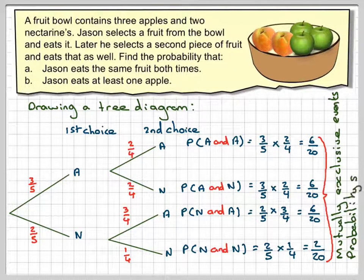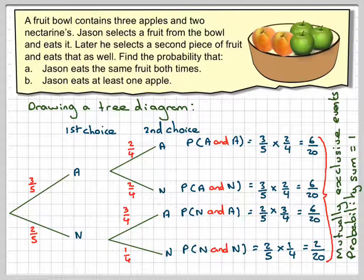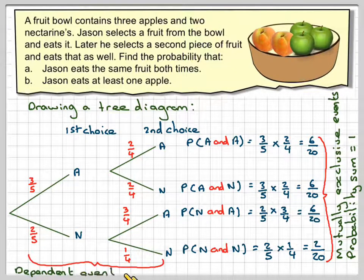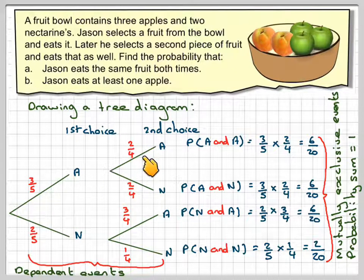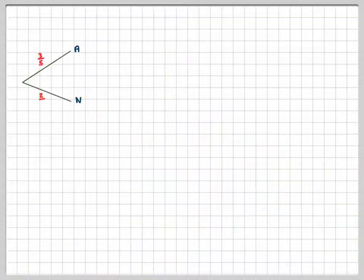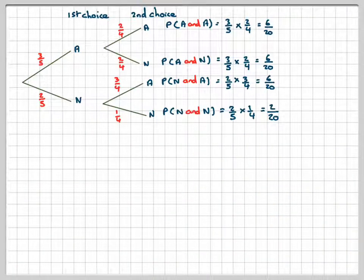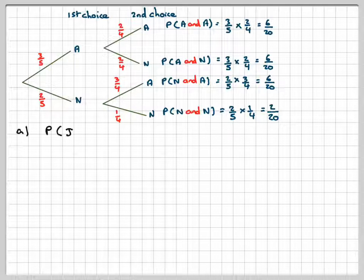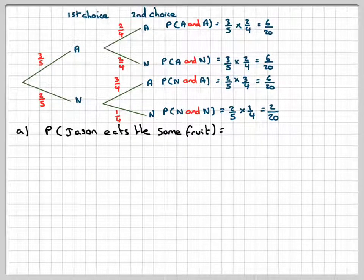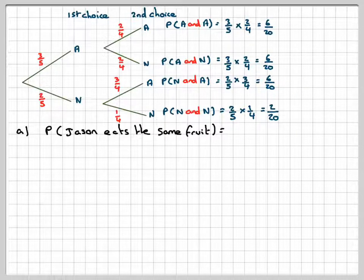These events here, even though we multiplied, are called dependent events. This event does affect this event—this is called conditional probability. Right, so now we use the tree diagram to answer the question. The probability that Jason eats the same fruit, well he can eat the same fruit here or here.